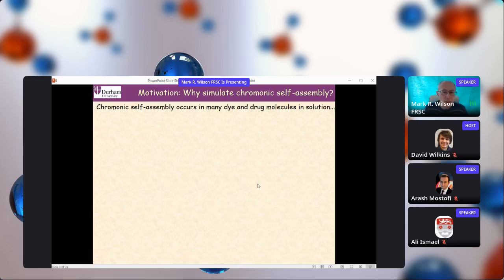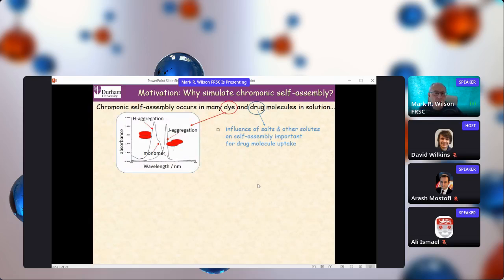Why are we interested in these? Let me give you one slide to motivate some of the work. Chromonic self-assembly occurs in many dye and drug molecules, and in particular for drug molecules, it's influenced by salts and other small solutes. That can have quite an important effect on the uptake of drug molecules. For many dye molecules, you get situations where you may have certain absorbance at a particular wavelength from a monomer in solution. But at higher concentration, depending on how the aggregation occurs, you get different sorts of absorbance.